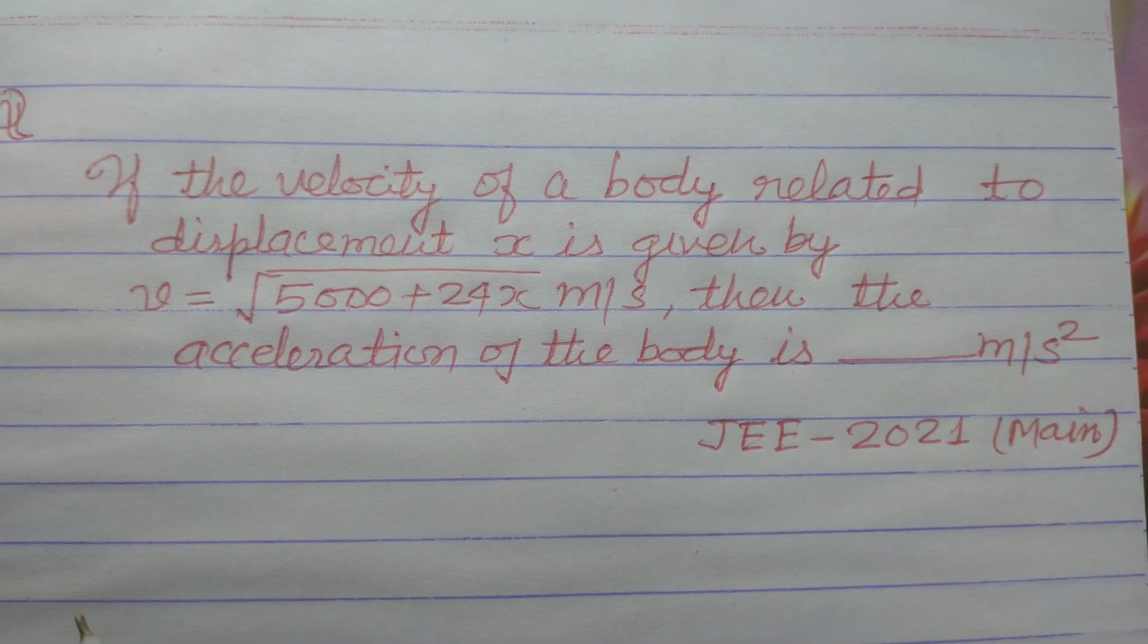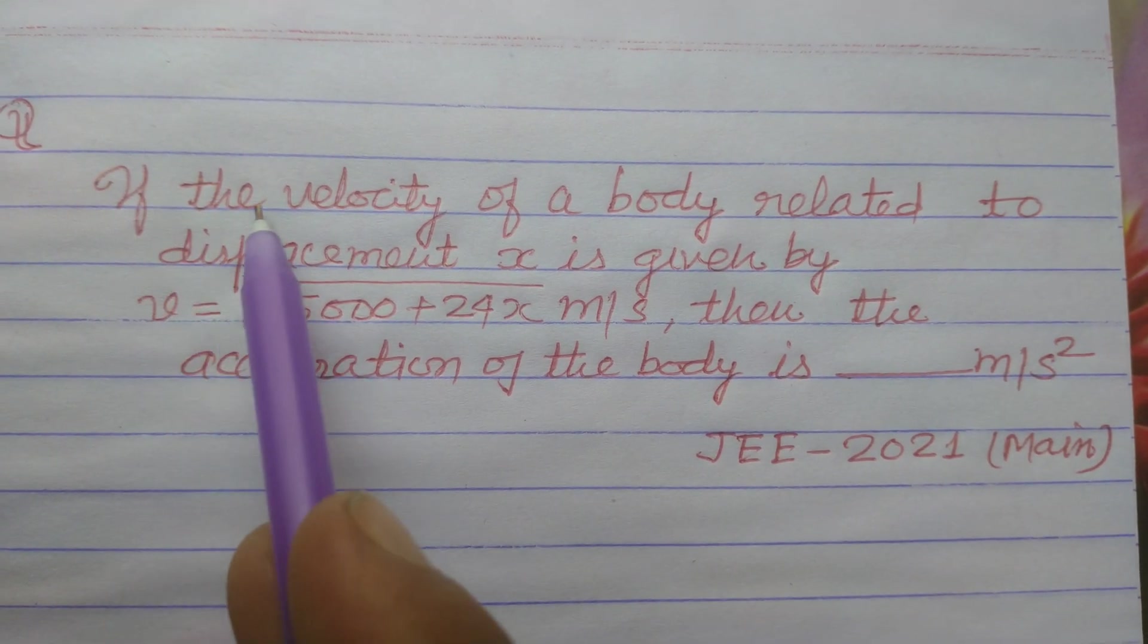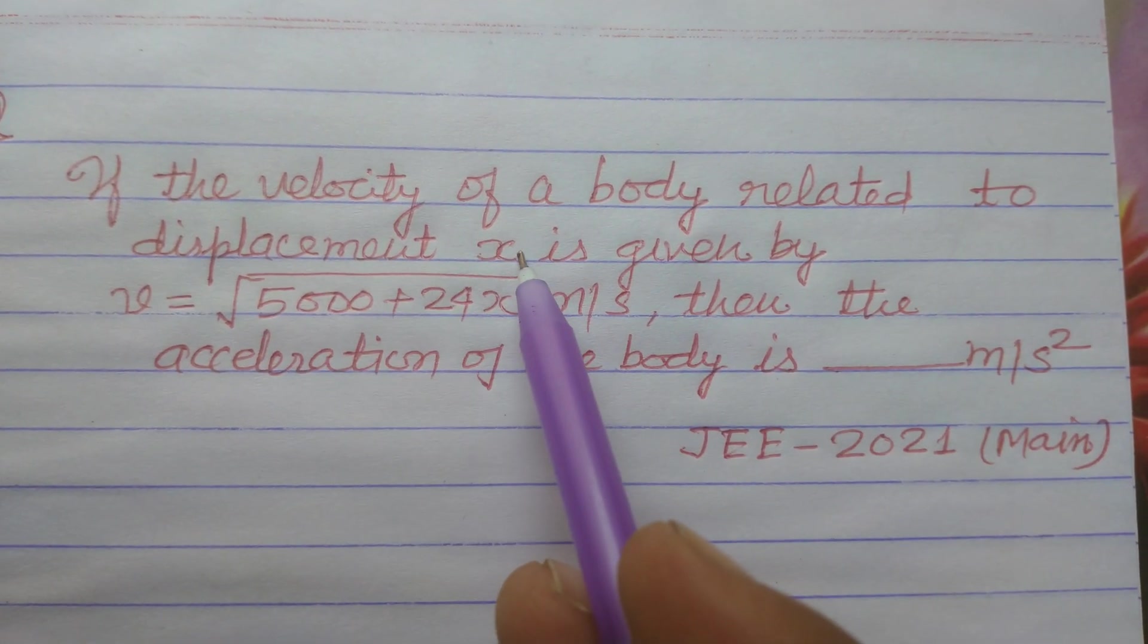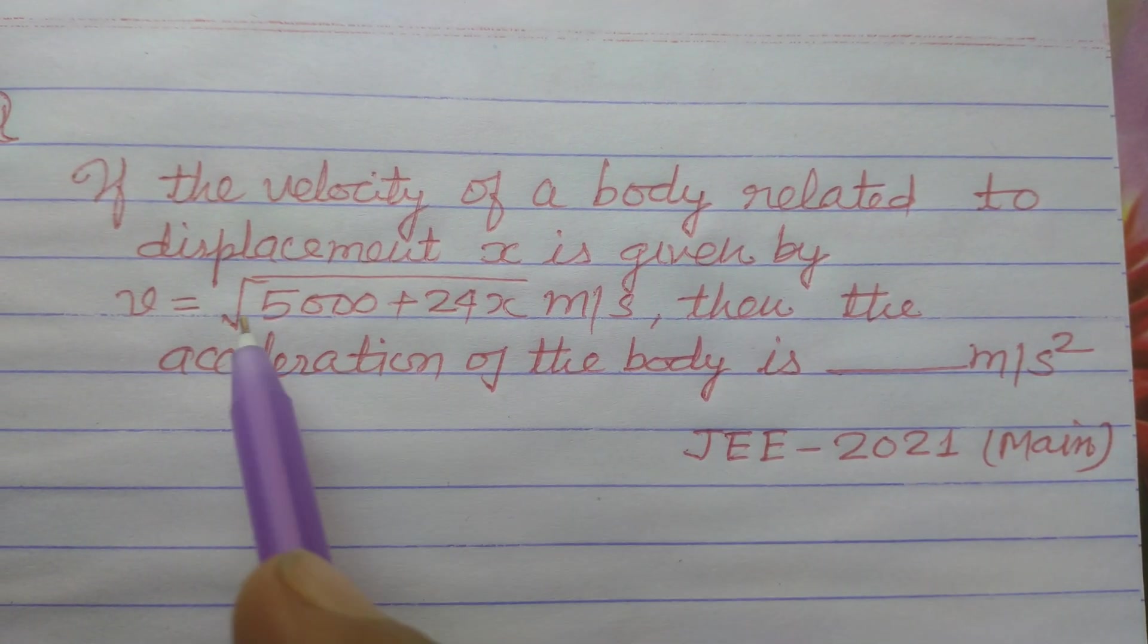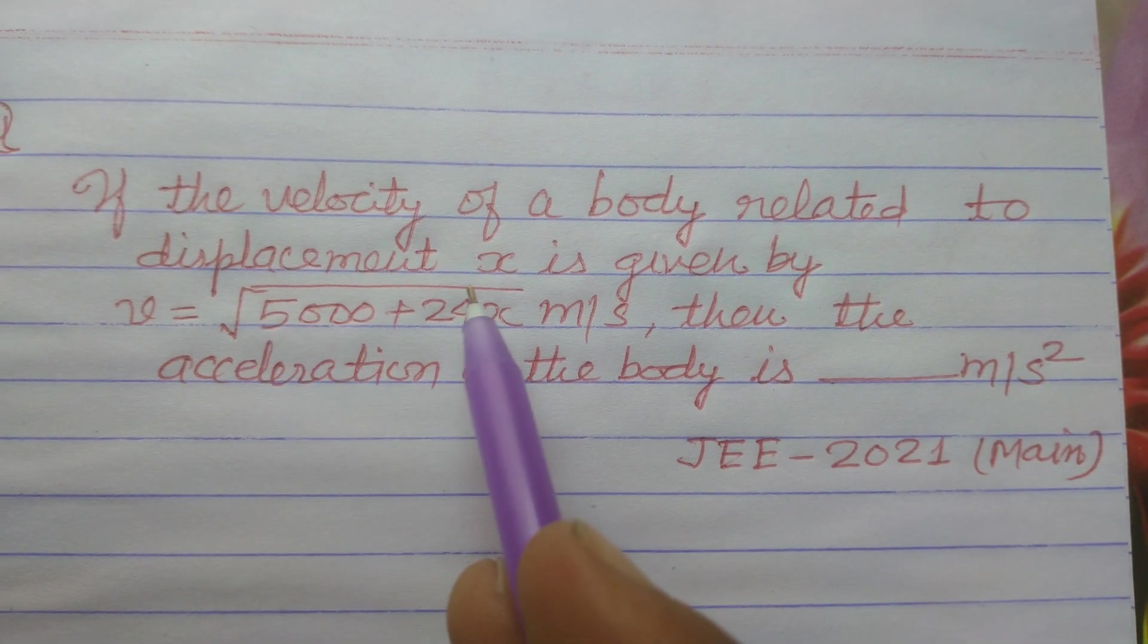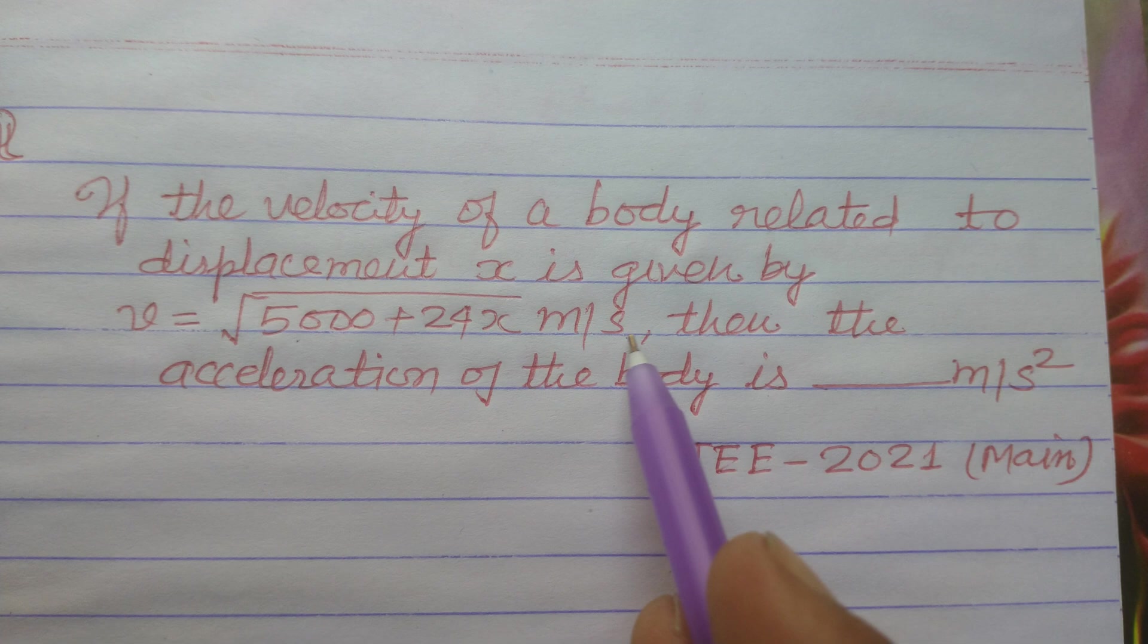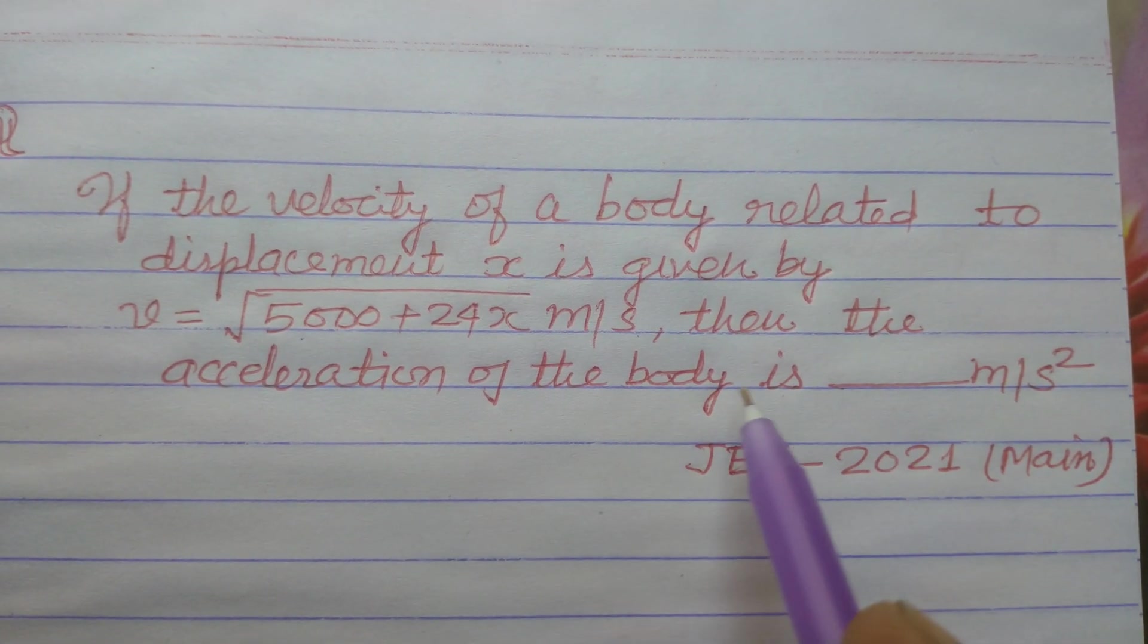Hello students, welcome to the C2 channel. The question is: if the velocity of a body related to displacement x is given by v = √(5000 + 24x) meters per second, then the acceleration of the body is...